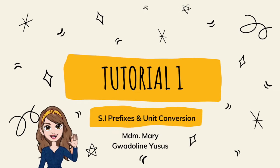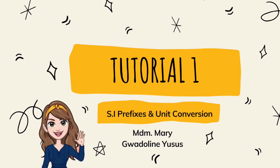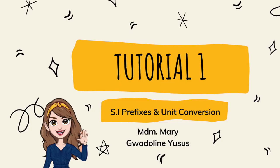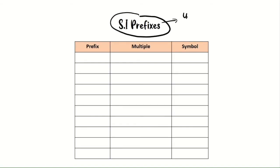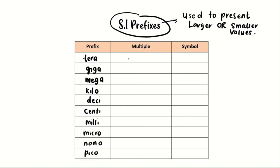Hi, welcome to my first tutorial video where we're going to discuss SI prefixes and unit conversion. Let's start with SI prefixes — they are used to present larger or smaller values. The prefixes you need to remember are: tera, giga, mega, kilo, deci, centi, milli, micro, nano, and pico.